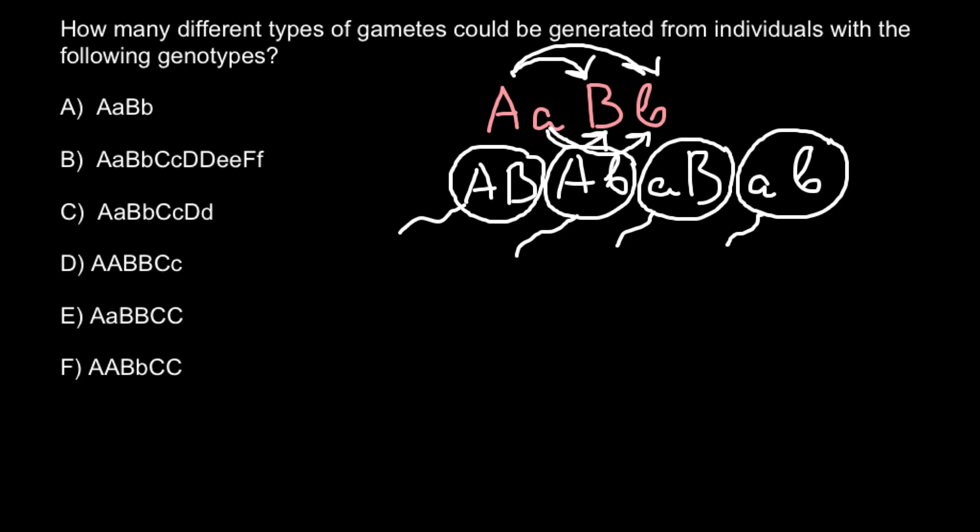So and of course as you see all the gametes are haploid. So if we have here four alleles in the diploid organism, here in this sex cell we have only half the number of the alleles.